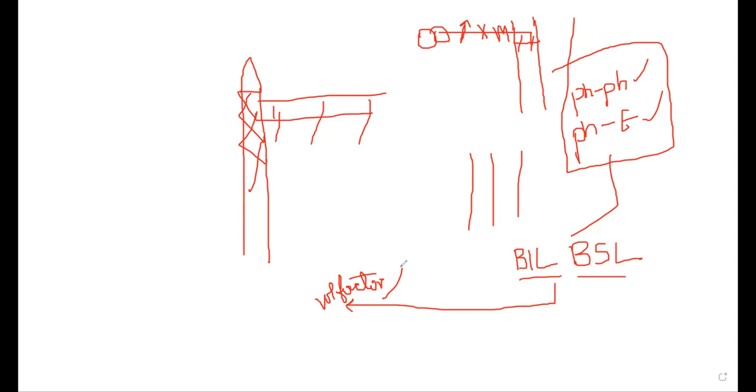I mean less than this or desired ones and the next one is where you are placing the lightning arrestor to attain these values and after getting these BIL and BSL levels, I am calculating the phase to ground and phase to phase clearances.